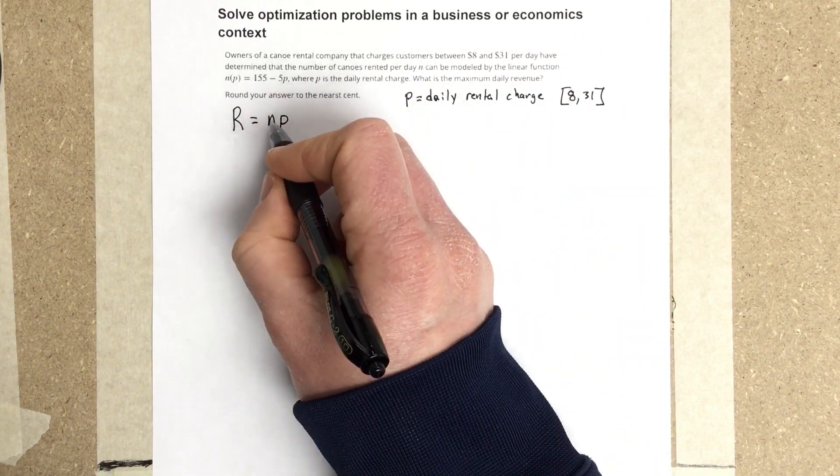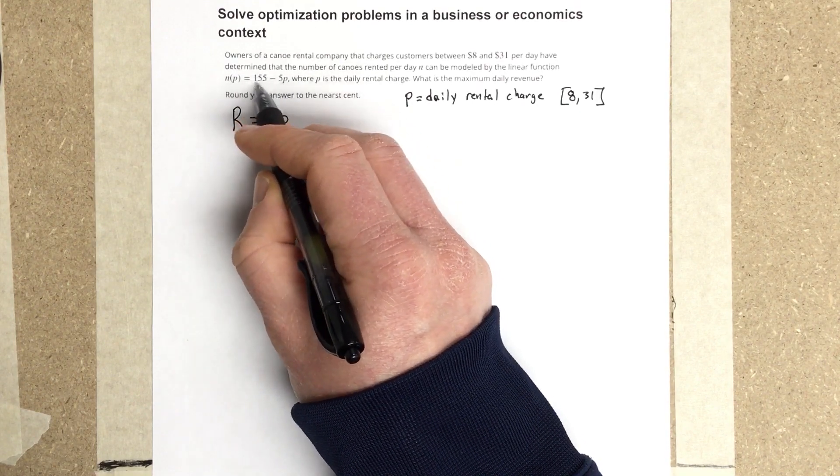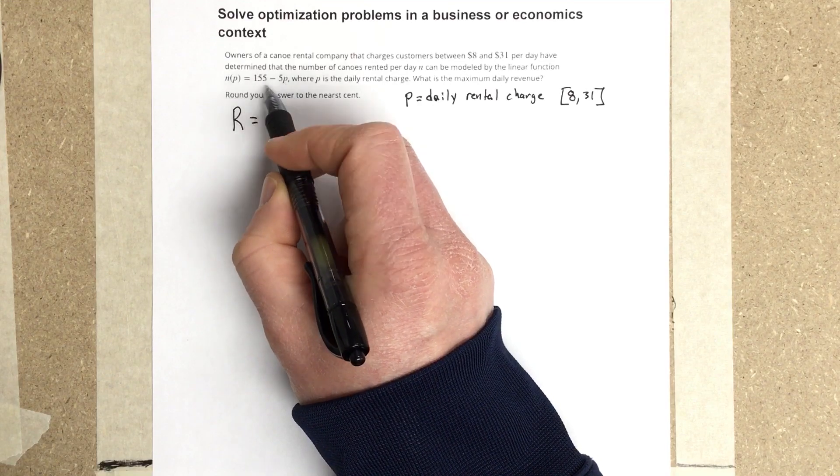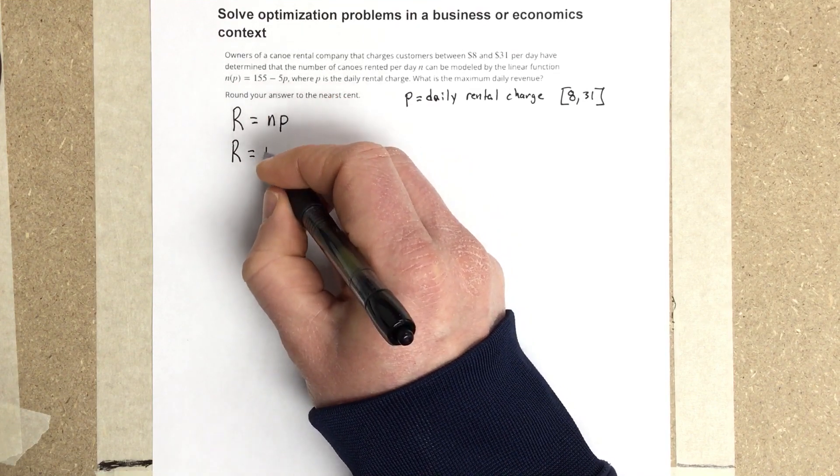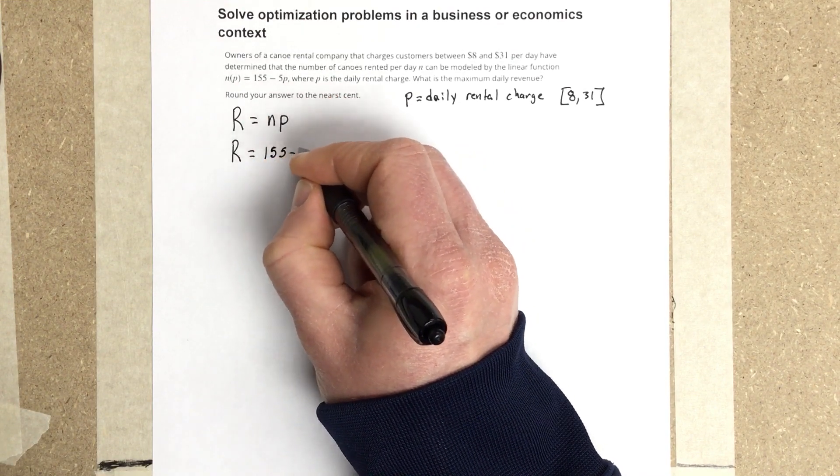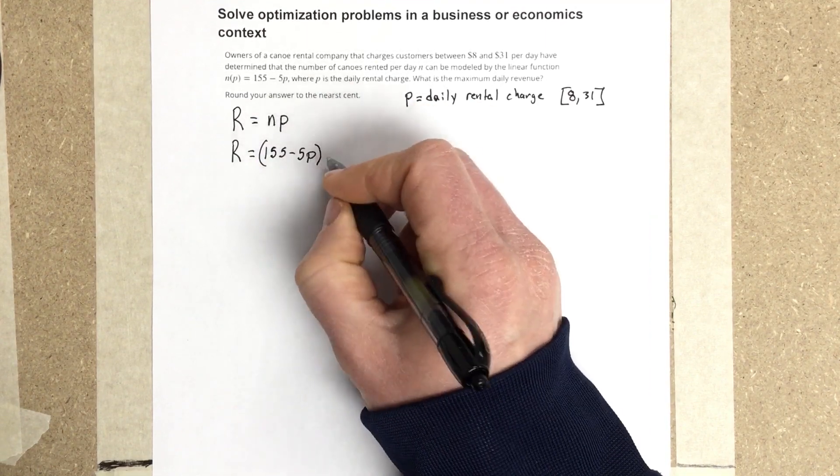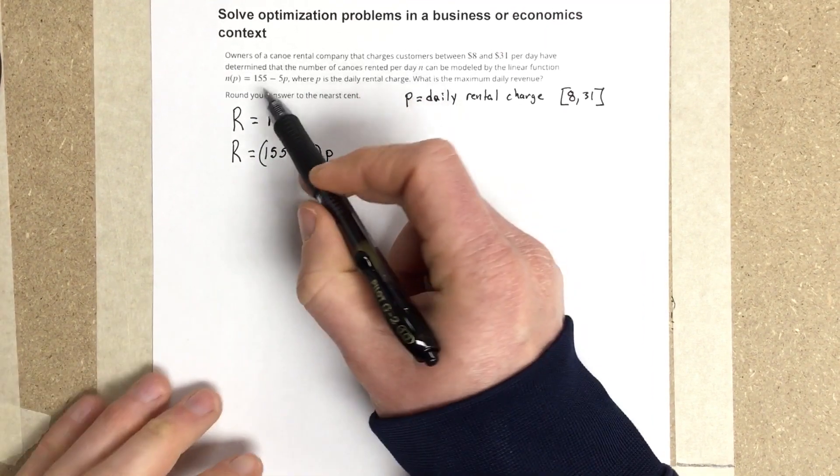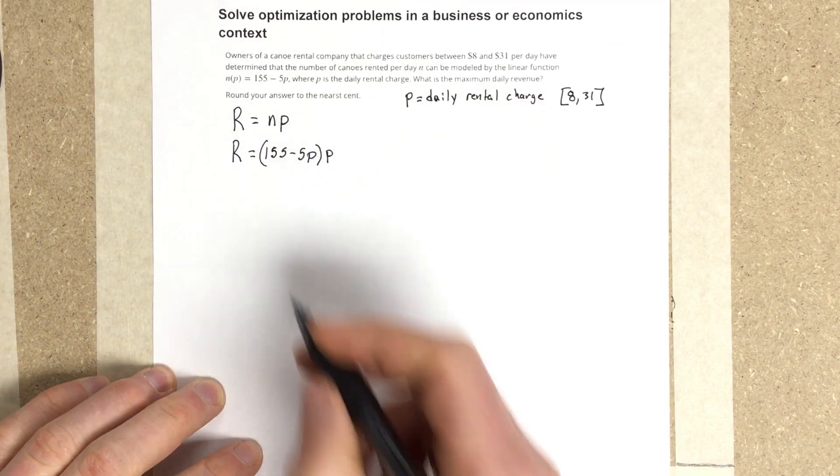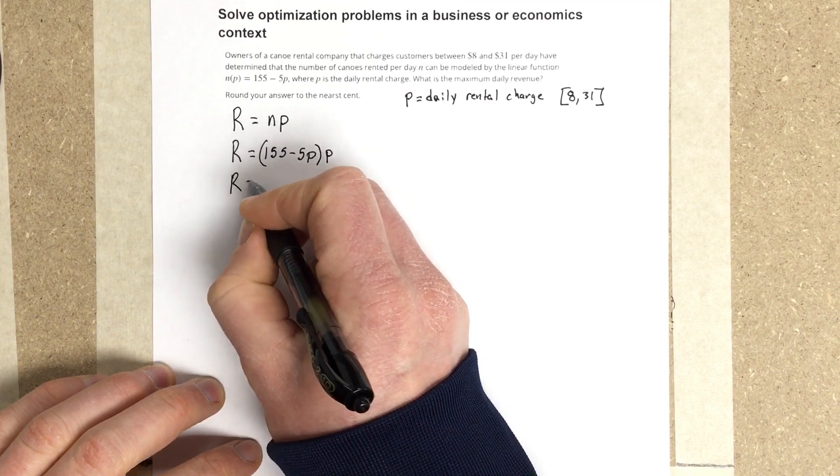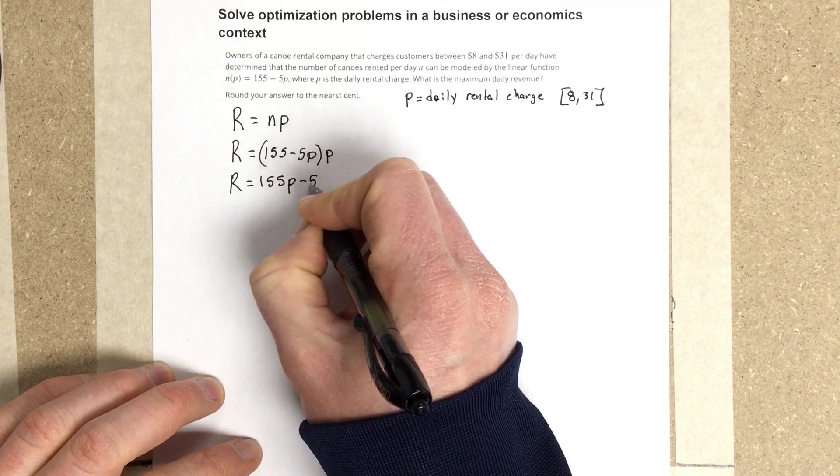We can substitute this N for the actual expression for the number of canoes rented. So we can say that R is equal to 155P minus 5P squared.